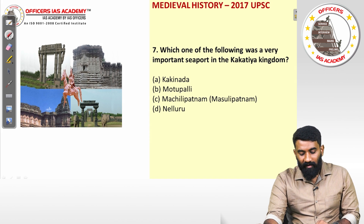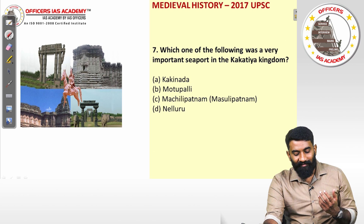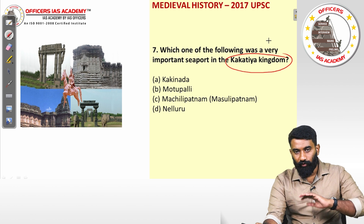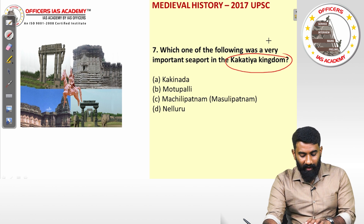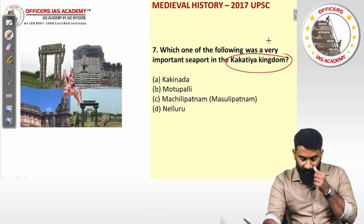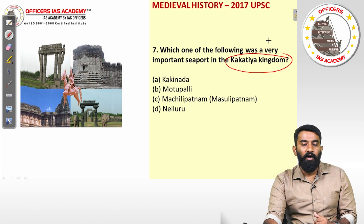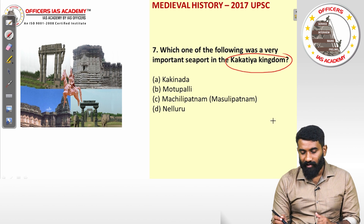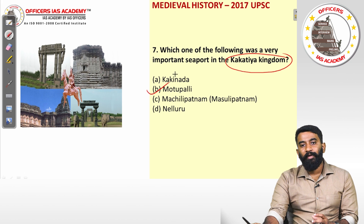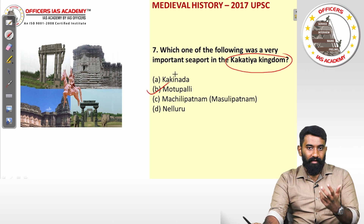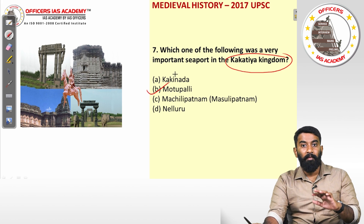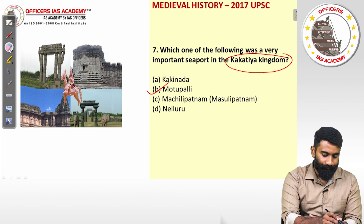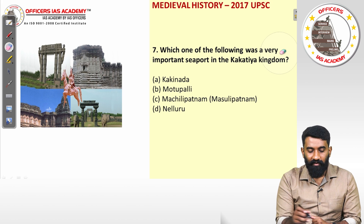Question seven: which was a very important seaport in the Kakatiya kingdom? The options are Kakinada, Motupalli, Masulipatnam, and Nellore. The answer is straightforwardly Motupalli. Motupalli was a very busy seaport and was visited by Marco Polo, who wrote about it being an important seaport of the Kakatiya territory. The answer is option B.